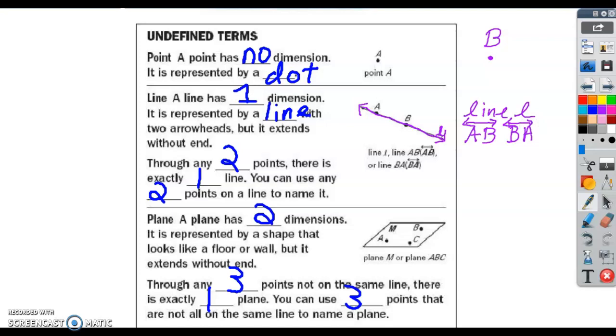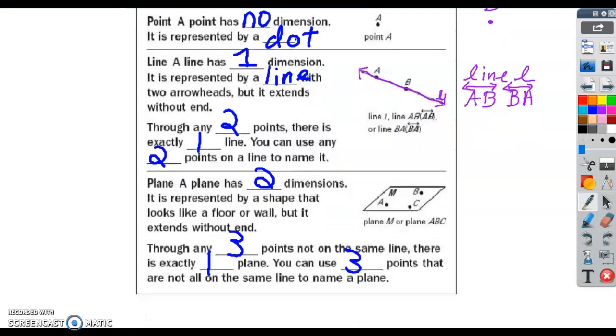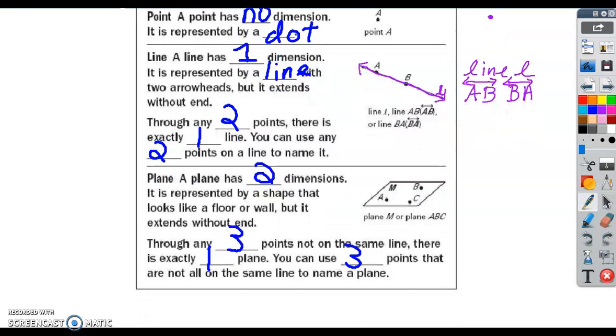Through any two points, there is exactly one line, and you can use any two points on a line to name it. A point's got no length, no width, no height, no size. And lines have no thickness.